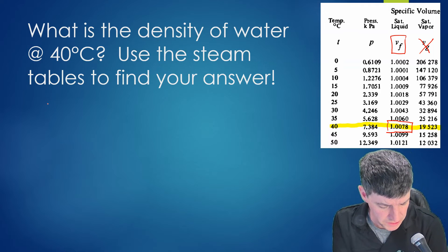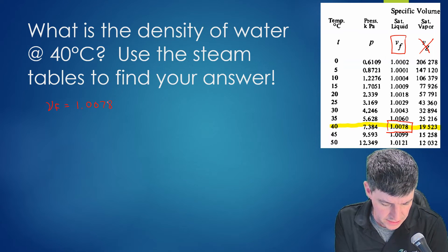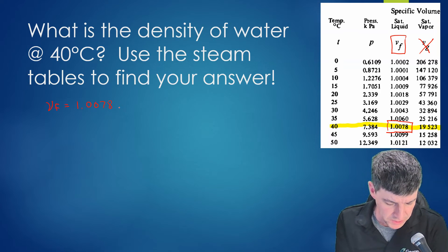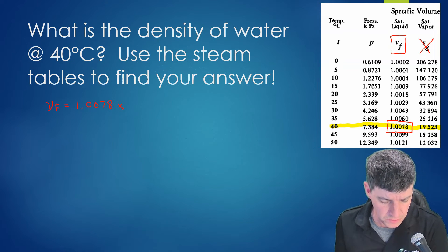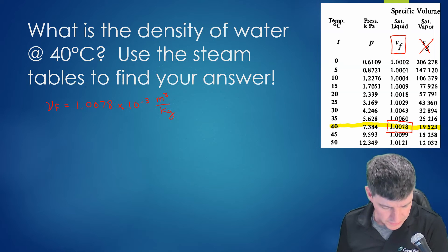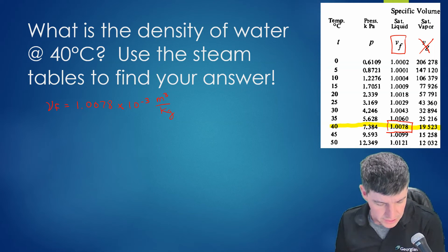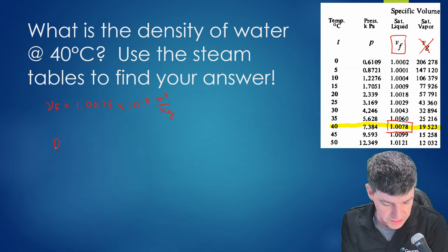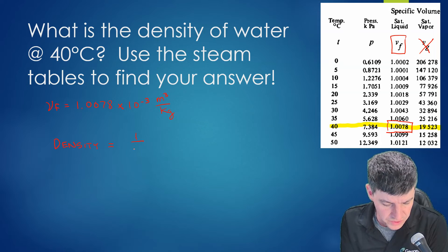First, I get my units correct. My vf is equal to 1.0078 — that would be cubic centimeters per gram — but I'll use it in the form where it's times 10 to the negative 3 cubic meters per kilogram. I could convert that by multiplying by 10 to the negative 3, or leave it in scientific notation form. I'll leave it in scientific notation. So my density is equal to 1 over vf.